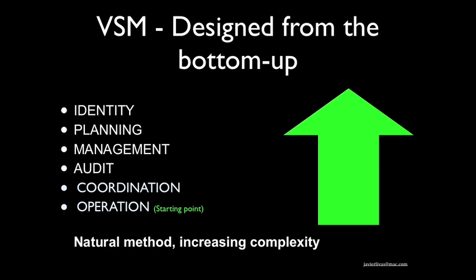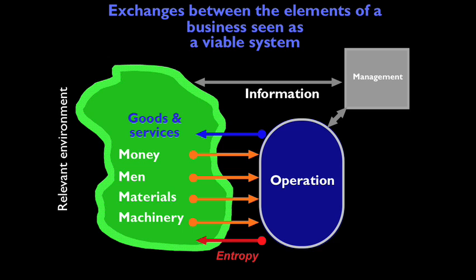The only trick of the viable system model is that the same recipe is repeated for every operation. You have identity, planning, direction, audit, and coordination within every operation. You can therefore isolate every operation, every process, to examine the exchanges of materials, money, machinery, and men with its immediate environment, which is part of the viable system, shown here colored green as an amoeba shape.